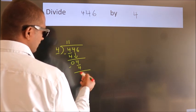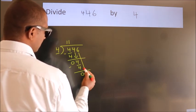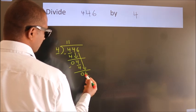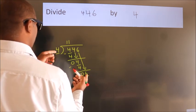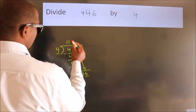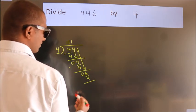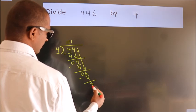After this, bring down the beside number. So, 6 down. So, 6. A number close to 6 in 4 table is 4 once, 4. Now, we subtract. We get 2.